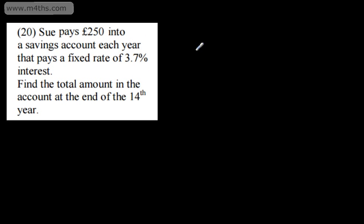In question 20, we're told Sue pays £250 into a savings account each year that pays a fixed rate of 3.7% interest. We're asked to find the total amount in the account at the end of the 14th year. So this one is a sum. So what we're going to use is the sum of n terms. We'll have a 1 minus r to the n over 1 minus r. What I'm going to do is collect up a, r, s and n.